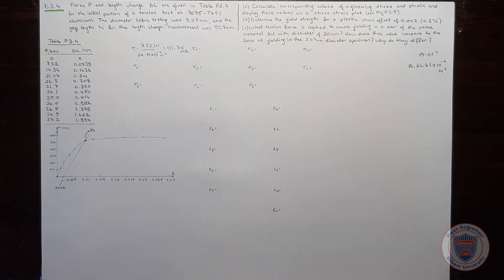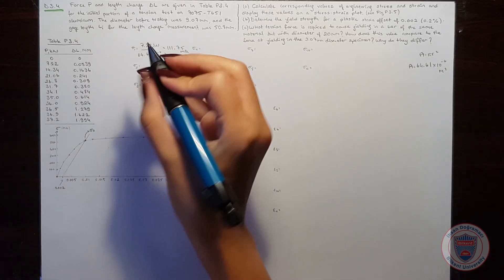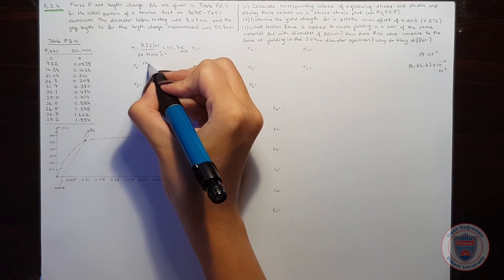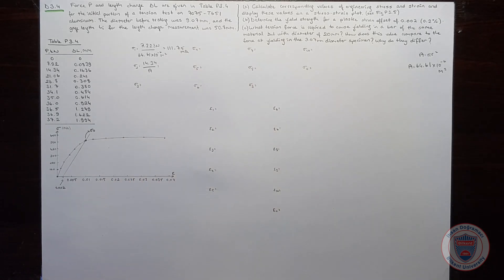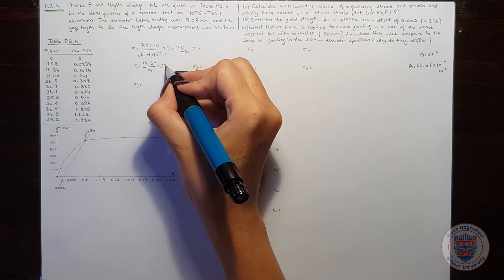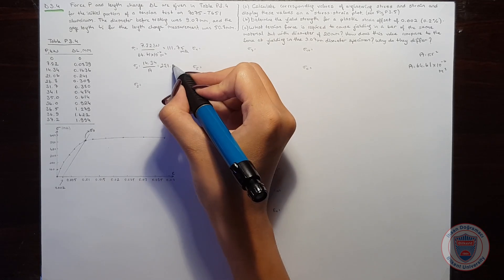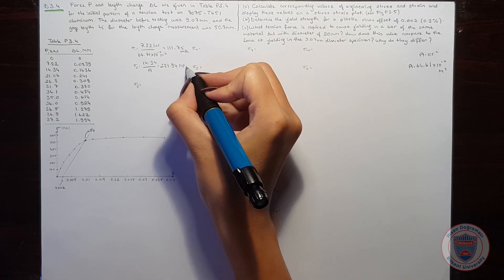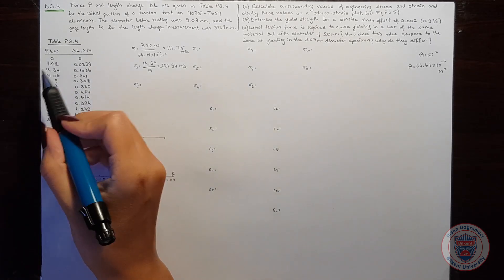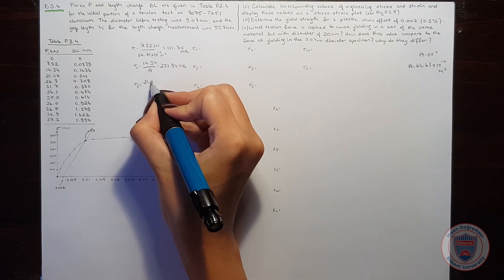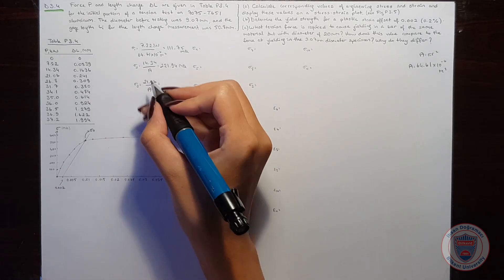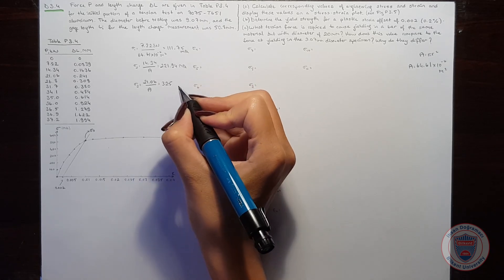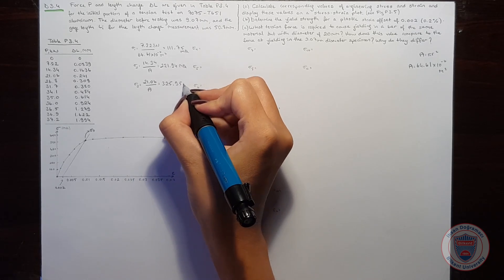For sigma 2, we will take the third force, and it is 14.34 over the area again. We will have 221.94 MPa. For sigma 3, we will take this force which is 21.06 over again the area, and it will give 325.95 MPa.